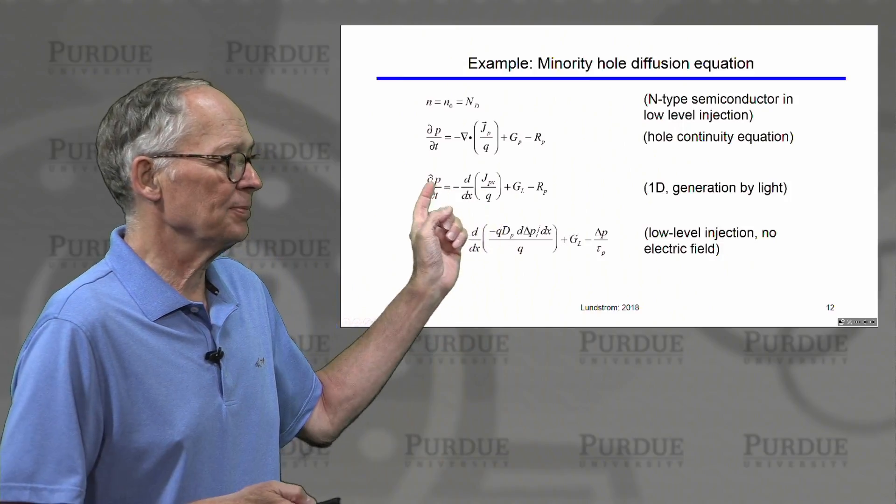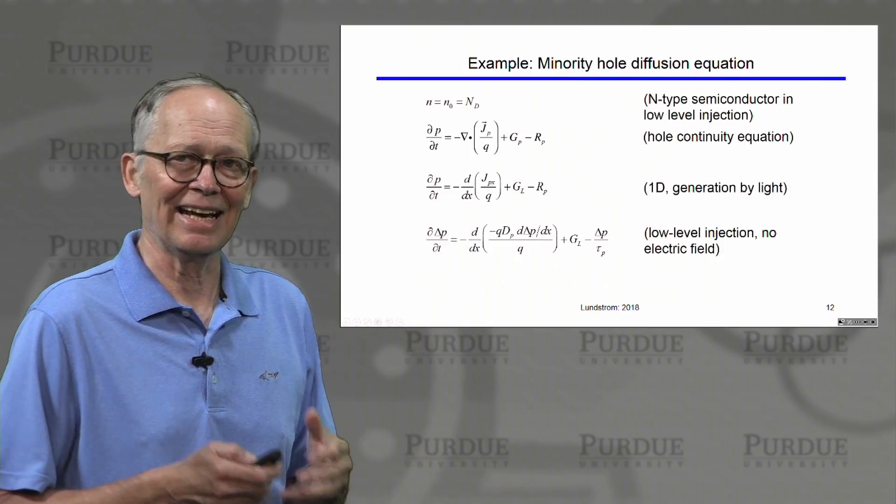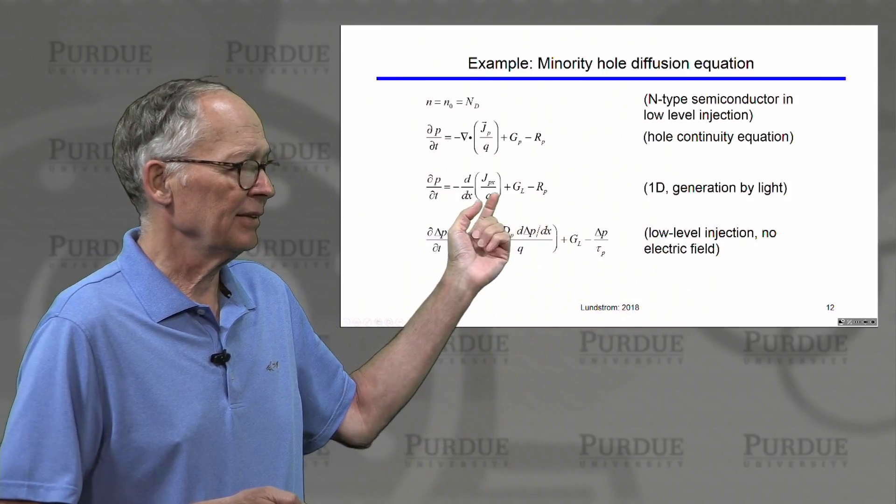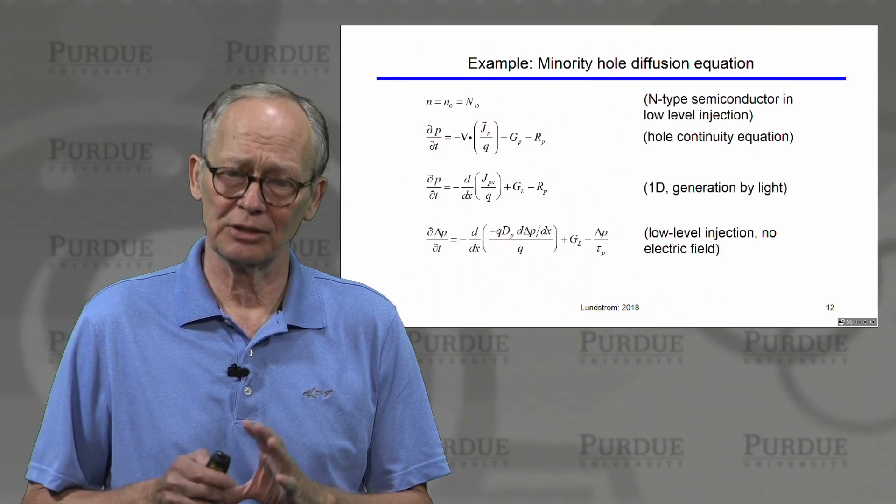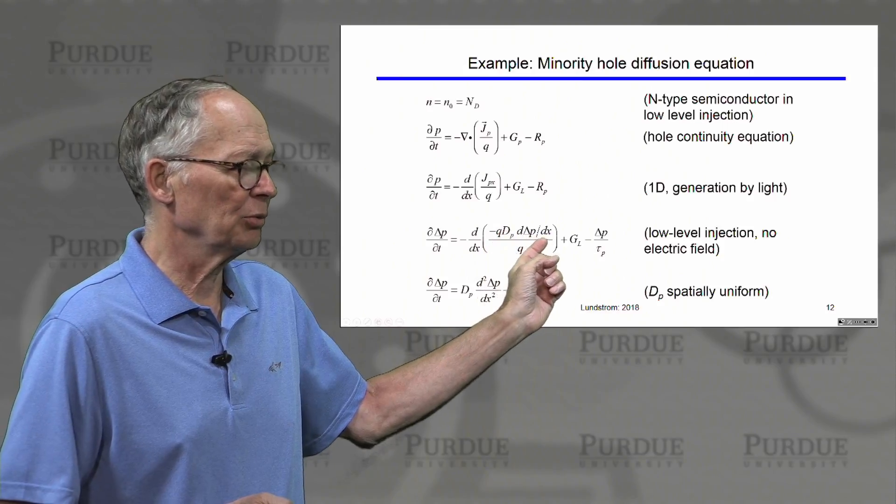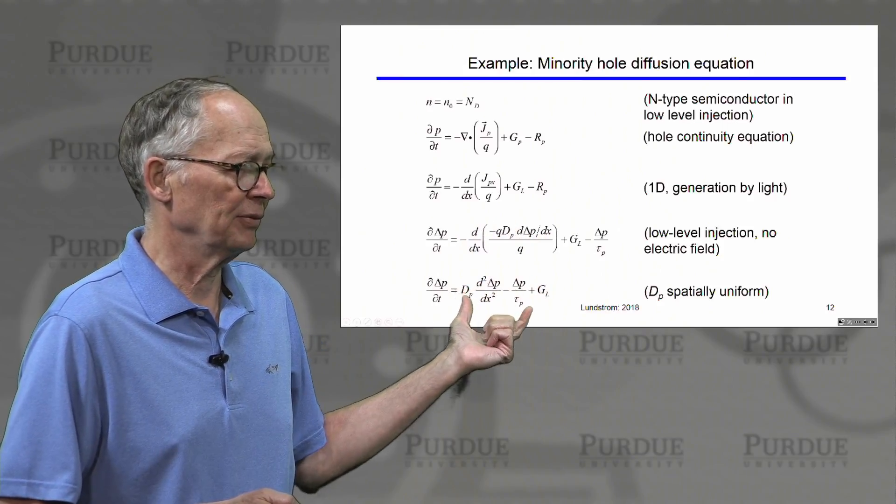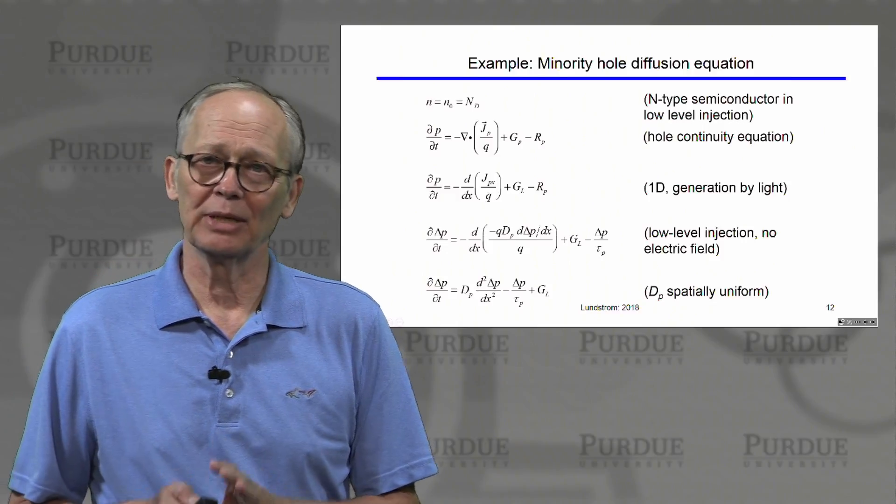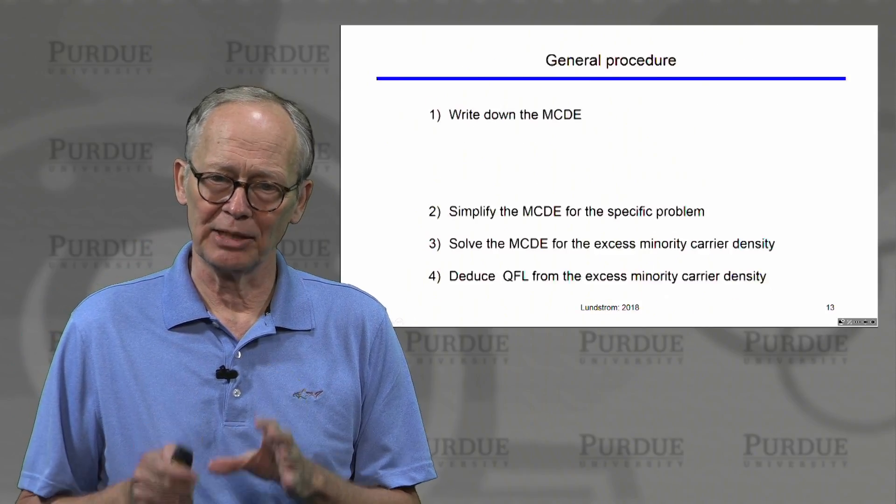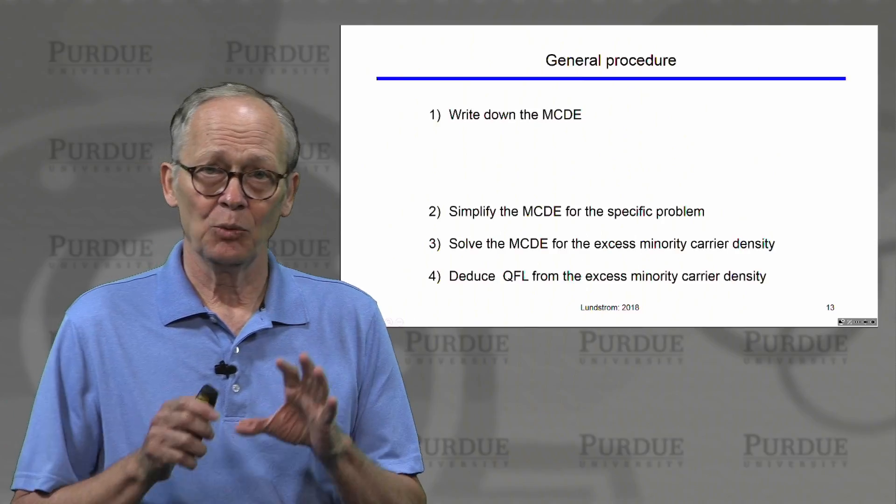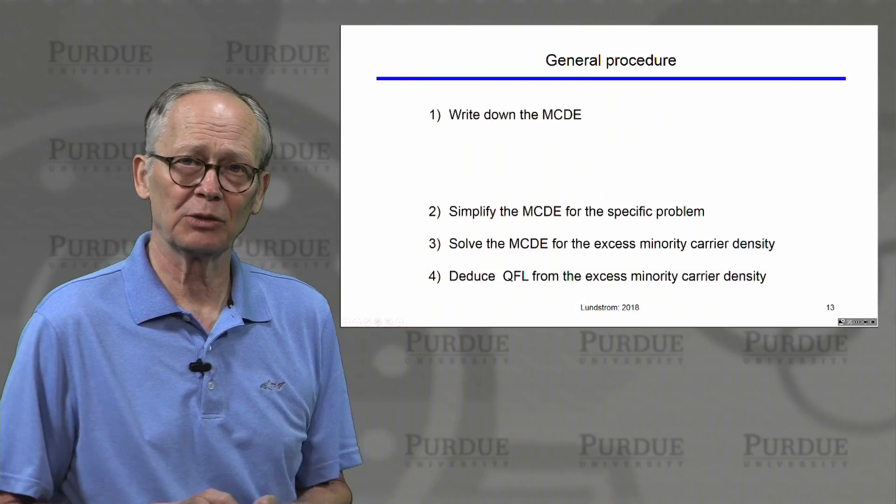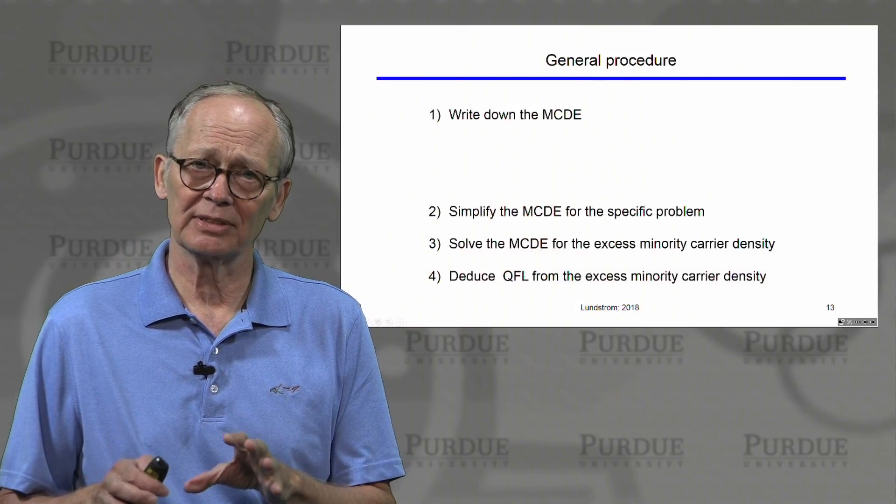If we have low-level injection, then the hole concentration is essentially the excess concentration which overwhelms the equilibrium holes. If we assume there's no electric field, then our current equation has only a diffusion component, no drift component. If we assume that the diffusion coefficient is uniform with position, we can pull it out of the derivative. We get this equation, which is known as a minority carrier diffusion equation that describes the behavior of minority carriers in semiconductors. We can solve this equation for different cases of interest.